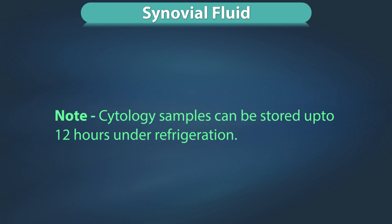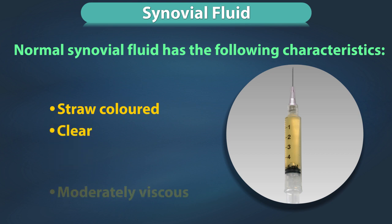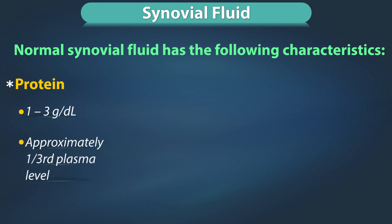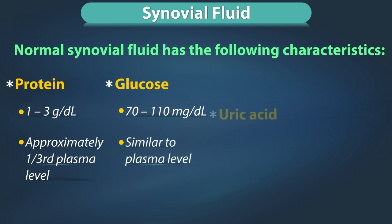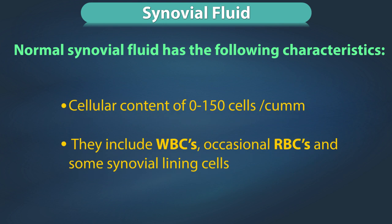Please note: cytology samples can be stored up to 12 hours under refrigeration. Normal synovial fluid characteristics: grossly it is straw-colored, clear, and moderately viscous. Proteins are 1 to 3 gram per deciliter, approximately one-third the plasma level. Glucose is 70 to 110 mg per deciliter, similar to plasma levels. Uric acid is 2 to 8 mg per deciliter, again similar to plasma level. Hyaluronate is 0.3 to 0.4 grams per deciliter. Cellular content is 0 to 150 cells per cubic millimeter.